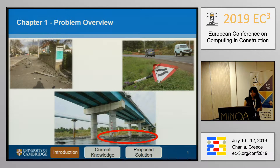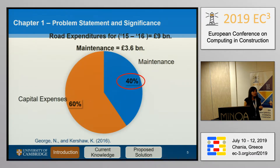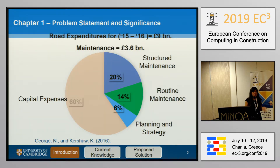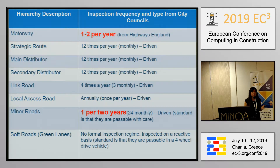In 2015-16, the road expenditures for the UK were £9 billion. From these £9 billion, almost half were allocated for maintenance. From this maintenance, 20% was given for routine maintenance and planning and strategy, which is a very large number. The routine maintenance is not only costly but also infrequent — for highways it happens only once or twice per year, and for minor roads, even less, like once every two years.